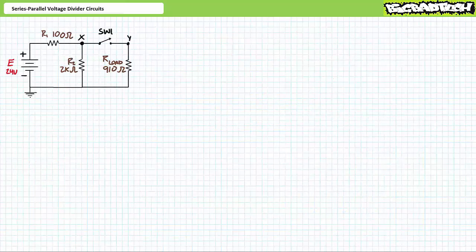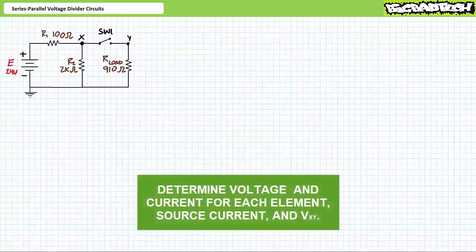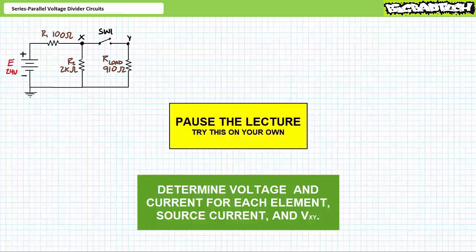Here's another example of a series parallel voltage divider circuit. Let's do this as a two-part exercise: part one with the switch open, part two with the switch closed. We'll check in between to make sure you're tracking. Part one — switch open. I invite you to solve for the voltage across and the current through each element in this system, and the voltage across the switch while in the open state. By all means, pause the lecture and try this on your own.